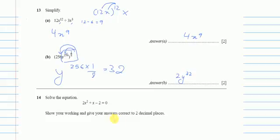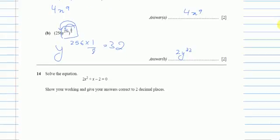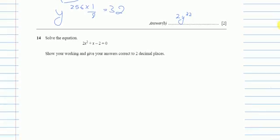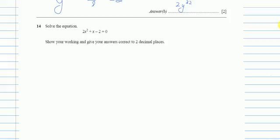Now question number 14. We have to solve the equation and we are given a quadratic equation. Now quadratic equations can be solved through factorization, completing the square, or the formula. We cannot use factorization. Why? Because the hint is this: when we solve through factorization, it is usually a whole number and it doesn't have any decimal places. So here I am going to use the formula.